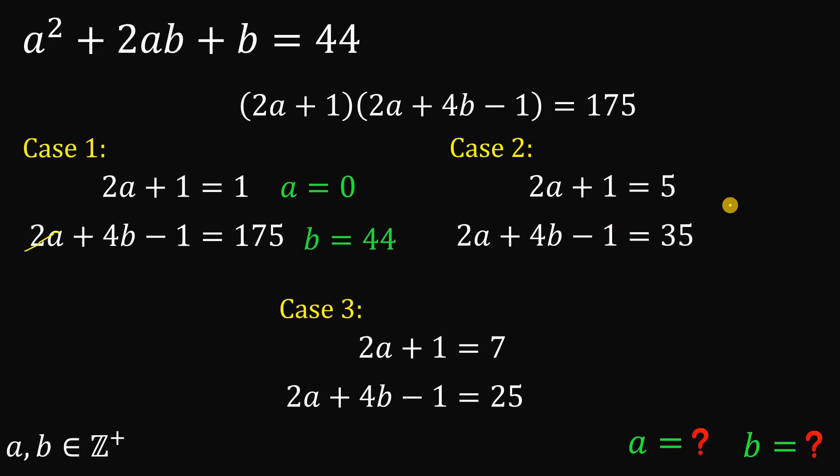On the second case, subtract 1 on both sides, divided by 2. We get a equals 2. And if a is 2, b equals 8. On the third case, a equals 3. And b, if a is 3, b equals 5.